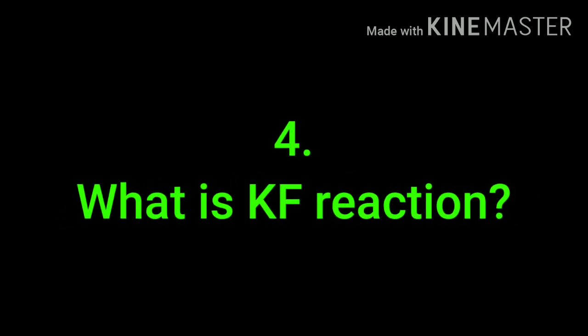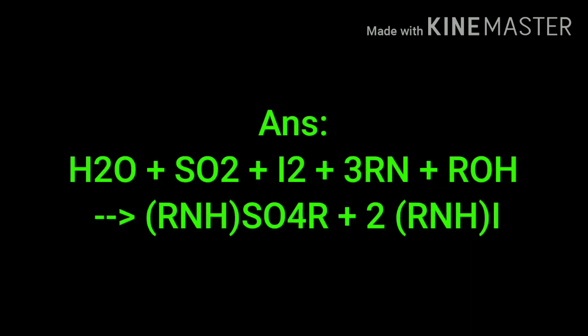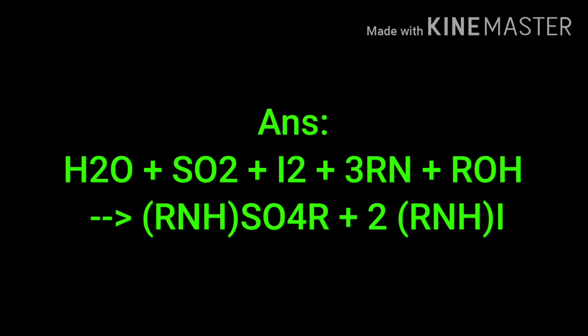The next question is: what is the KF reaction? This is actually a very complicated reaction. The reaction is: H₂O + SO₂ + I₂ + 3RN + ROH gives RNH·SO₄R + 2RNHI. This is the KF reaction.